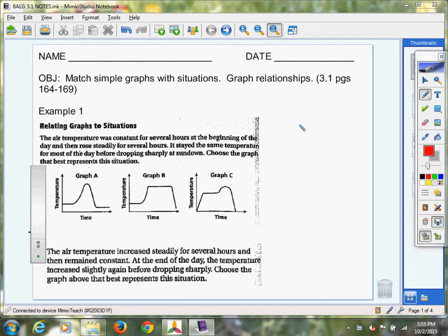Example 1, we're going to be given a situation, and then we are to select the graph that best represents that situation. So let me read it to you. The air temperature was constant for several hours at the beginning of the day and then rose steadily for several hours. It stayed the same temperature for most of the day before dropping sharply at sundown. Choose the graph that best represents the situation.